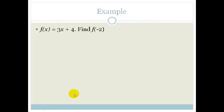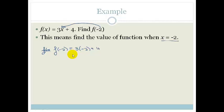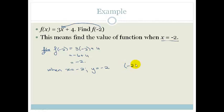So they're telling us that f of x equals 3x plus 4 and they say find f of minus 2. This means they want the value of the function when x equals minus 2 — so wherever we see x, we substitute in minus 2. f of minus 2 is going to be 3 times minus 2 plus 4. 3 times minus 2 is minus 6, so it's minus 6 plus 4, which equals minus 2. Remember that f of x could be replaced with the letter y, so when x equals minus 2, y happens to equal minus 2 as well, and plotted as a Cartesian point that would be (-2, -2).